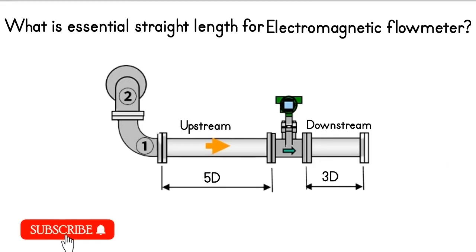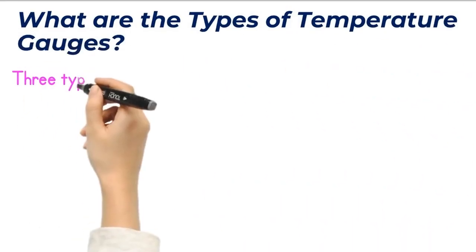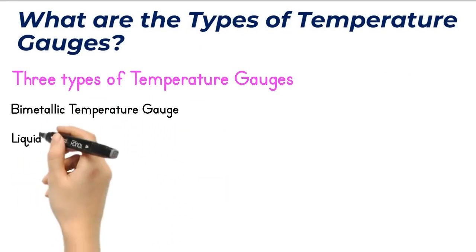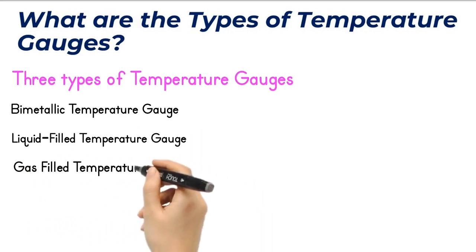What are the types of temperature gauges? There are three types of temperature gauges: bimetallic temperature gauge, liquid-filled temperature gauge, and gas-filled temperature gauge.